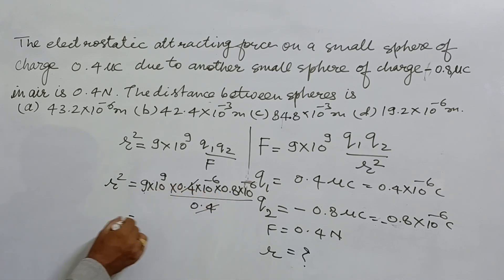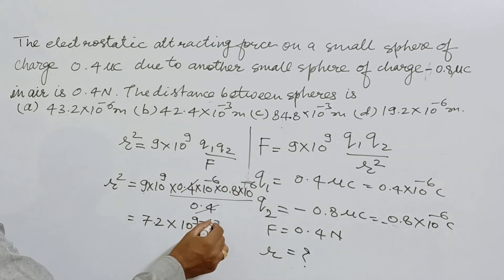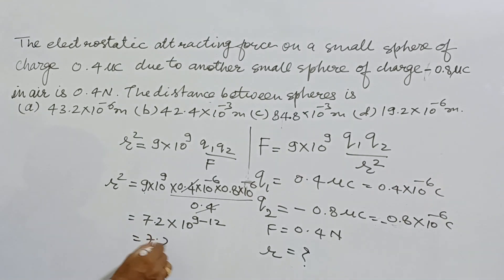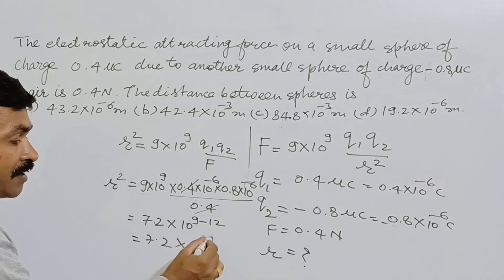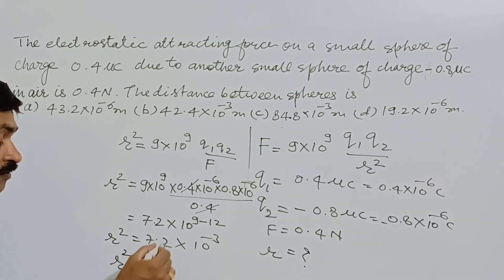...and 10⁹ minus 12 gives 10⁻³, so 7.2×10⁻³. So r² is equal to this - you can have 72×10⁻⁴ meters.